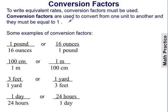Conversion factors must be used to write equivalent rates. A conversion factor is used to convert from one unit to another and must be equal to one. Here are some examples: one pound over 16 ounces, 100 centimeters to one meter, three feet to one yard, and one day to 24 hours. As long as the units over each other equal one, it is a valid conversion factor.